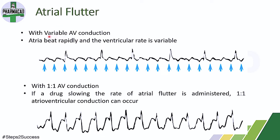This is called atrial flutter with variable AV conduction — the atria beat rapidly and the ventricular rate is variable, not exactly the same as the atria. You can see there are multiple P waves compared to QRS waves; QRS waves are fewer compared to P waves.